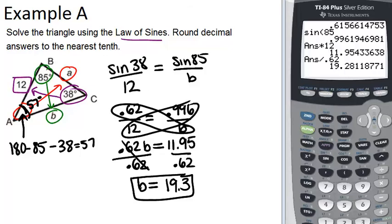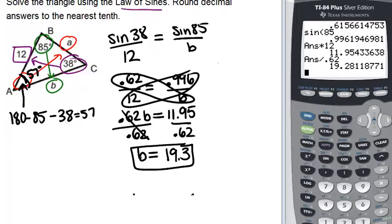So now we can set up a new equation, which is that sine of 38 over 12 equals the sine of 57 over A. Again, you just always want to match up angles with their opposite sides.